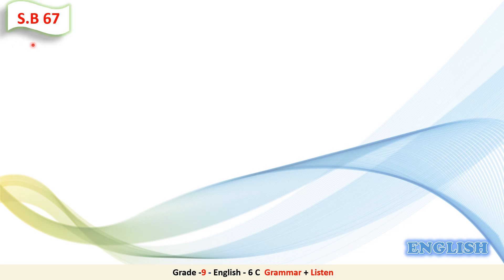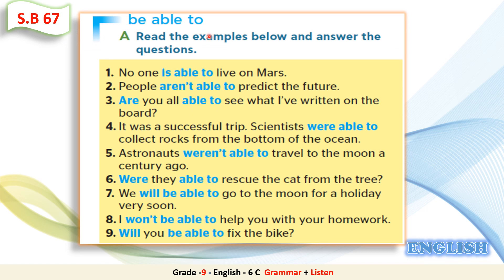Could you please open your Students' Book page 67. 'Be able to' – read the examples below and answer the questions. Let's read these examples together. 1. No one is able to live on Mars. 2. People aren't able to predict the future. 3. Are you all able to see what I've written on the board? 4. It was a successful trip. 5. Scientists were able to collect rocks from the bottom of the ocean. 6. Astronauts weren't able to travel to the moon a century ago. 7. Were they able to rescue the cat from the tree? 8. We will be able to go to the moon for a holiday very soon. 9. I won't be able to help you with your homework. 10. Will you be able to fix the bike?